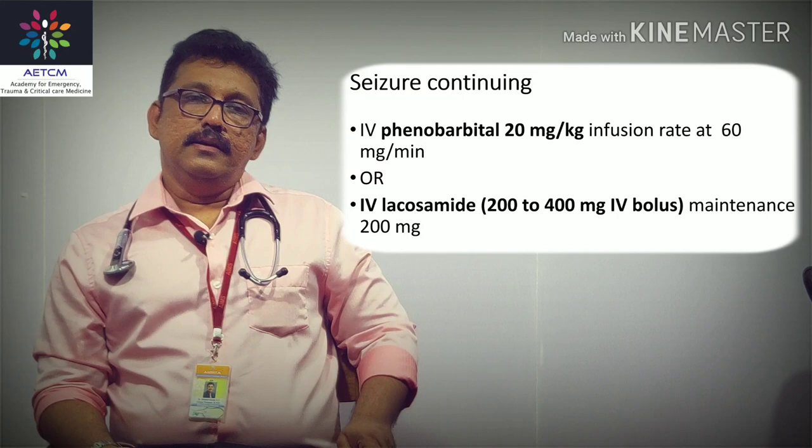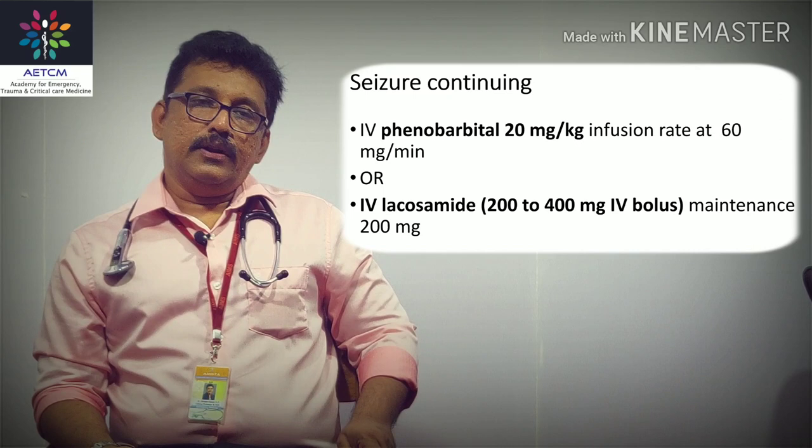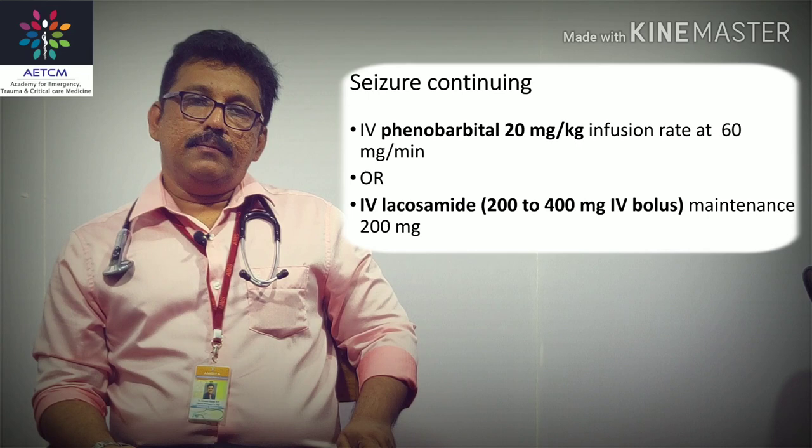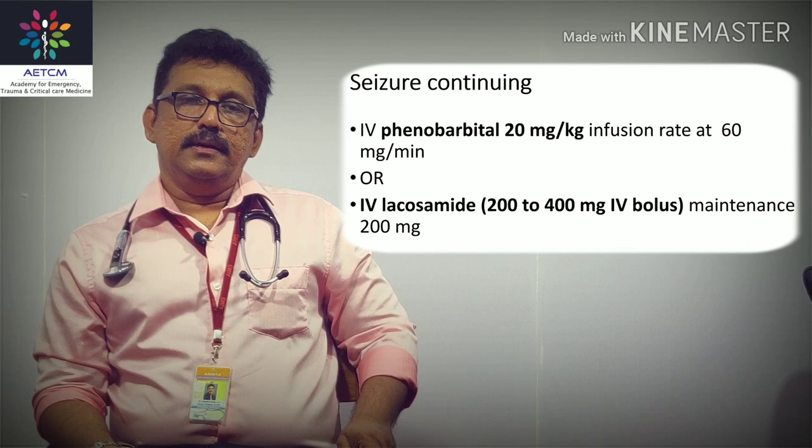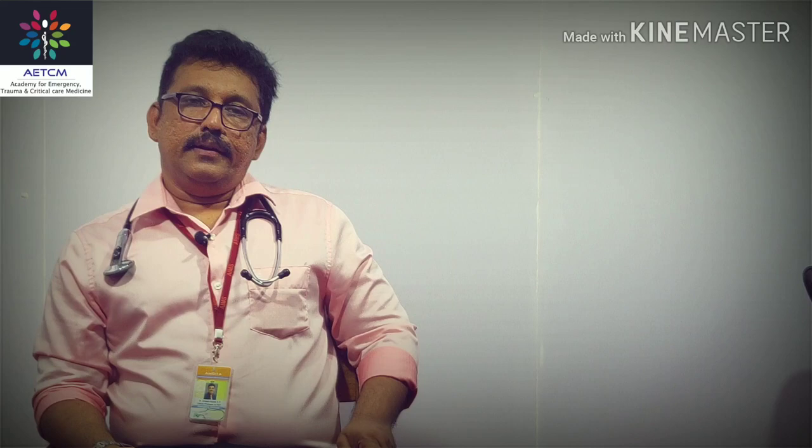If the seizure is still not controlled, give phenobarbital 20 mg per kg as a bolus at an infusion rate of 60 mg per minute. Another option in acute settings is IV lacosamide 200 to 400 mg bolus with a maintenance dose of 200 mg. Either phenobarbital or lacosamide can be used at this stage.